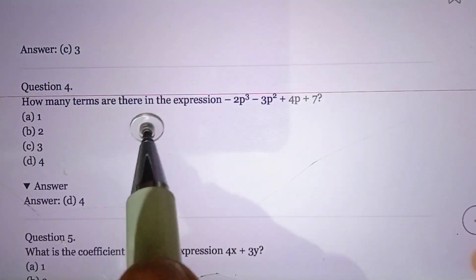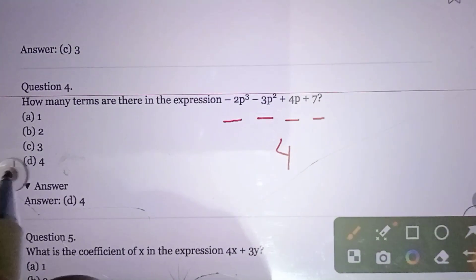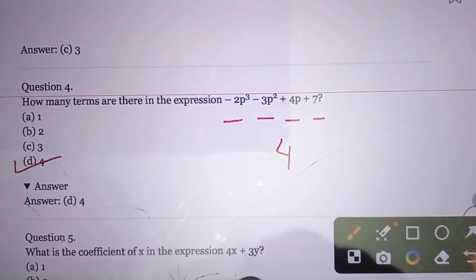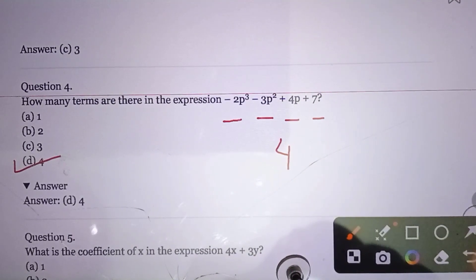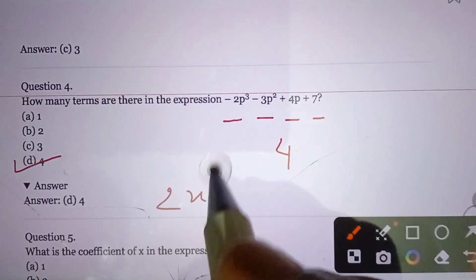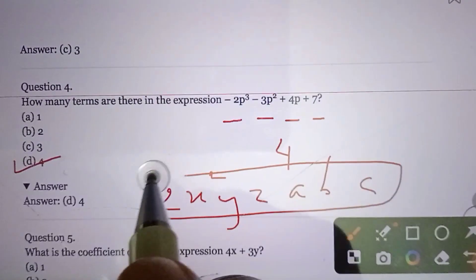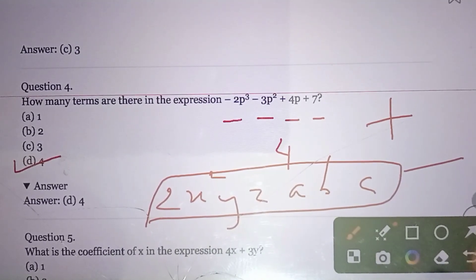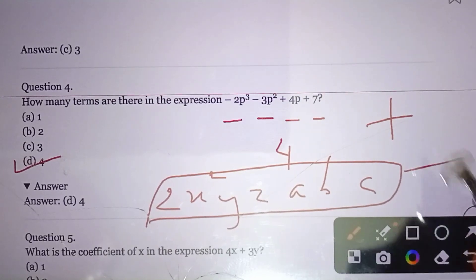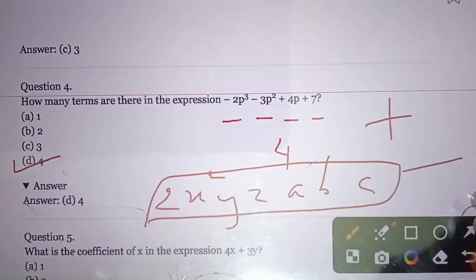Question number four: How many terms are there in the expression shown? To identify terms: if a plus or minus sign separates parts, each part is a separate term. For example, something like 2x·2y·z·abc with no sign in the middle is a single term. Only when a plus or minus sign is present do we count multiple terms — first term, second term, third term, and so on.